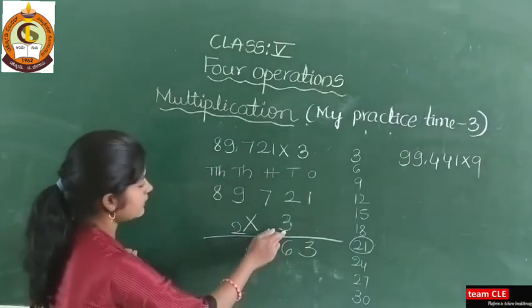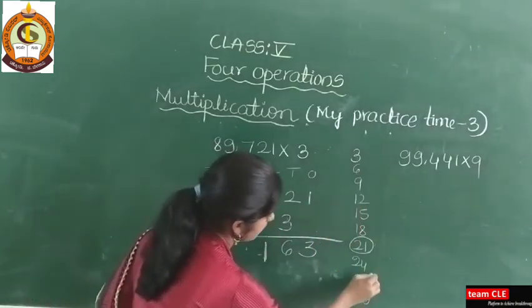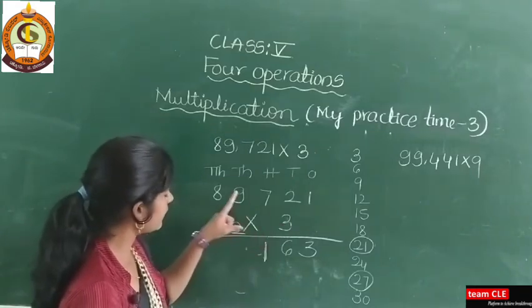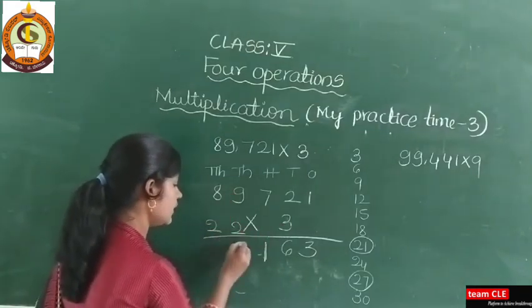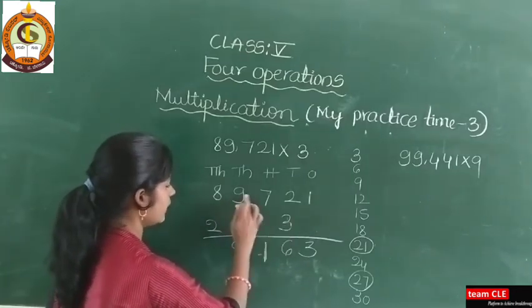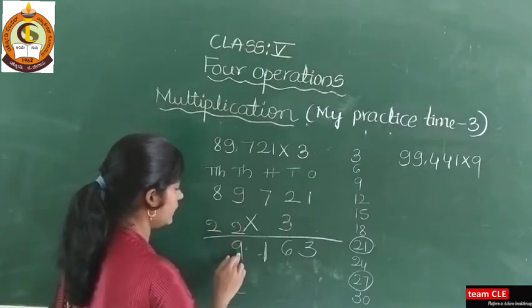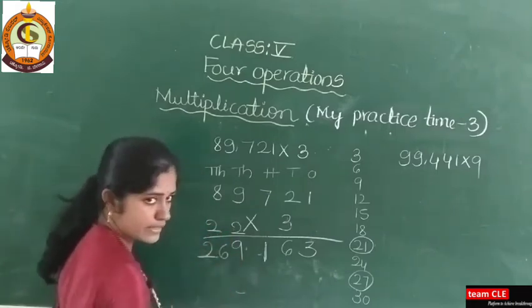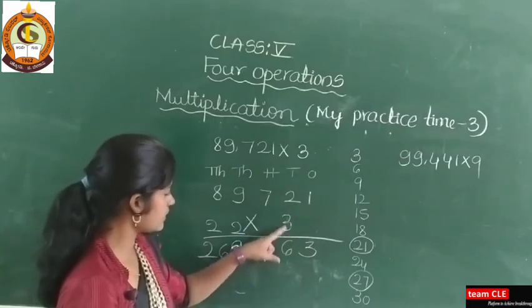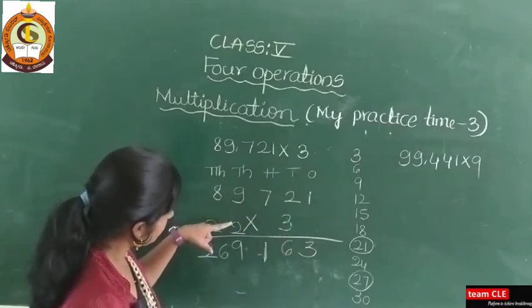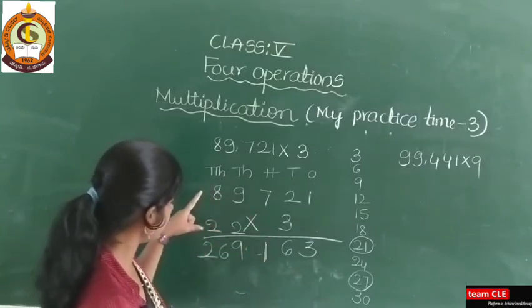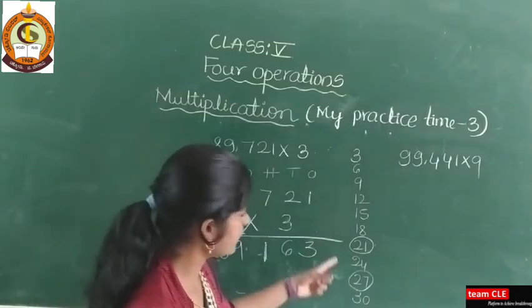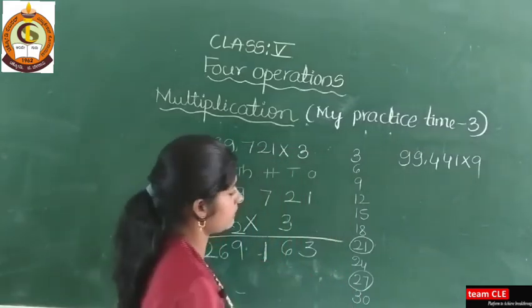Next, 3 nines are 27, and don't forget to add the carry. 3 nines are 27, plus the carry of 2 is 29 — carry 2, write 9. Then 3 eights are 24, plus carry 2 is 26. So: 3 ones are 3, 3 twos are 6, 3 sevens are 21 (carry 2, write 1), 3 nines are 27 plus 2 carry = 29, 3 eights are 24 plus 2 carry = 26. This will be the product.